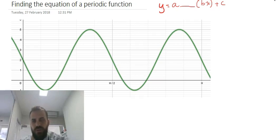So the equation of the line is going to be y equals a, it's either sine or cosine, don't know yet, bx plus c. So we've got to find the a value, the b value, and the c value.